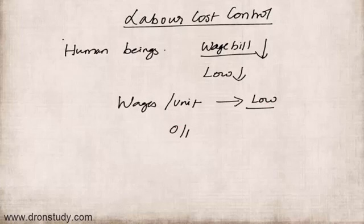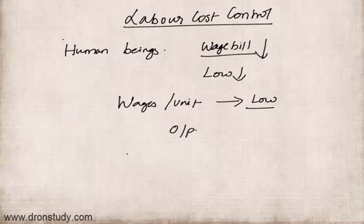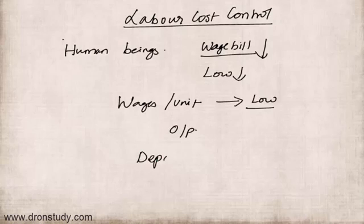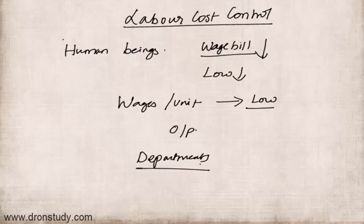A well-motivated team of workers can bring many wonders. Each organization should take efforts to raise labor productivity. Efforts for controlling labor cost should begin from the very beginning of the organization, and there should be a concerted effort by all departments to control wages. In a larger organization, various departments will be involved in the task of controlling labor cost. Let's see those departments one by one.